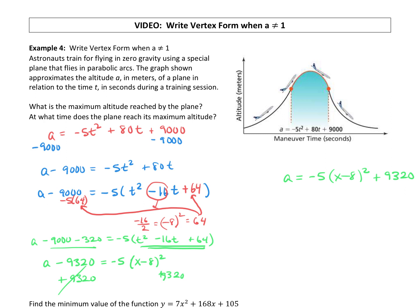So we have, for our equation, a equals negative 5 times x minus 8 squared plus 9,320. Because we are now in vertex form, we can identify that the vertex is tricky x positive 8 and then 9,320. So first question, what is the maximum altitude? The maximum altitude is going to be that y coordinate, 9,320 meters. And then what time does the plane reach the maximum altitude? So the plane reaches the max altitude after, that's what the x coordinate tells us, 8 seconds.